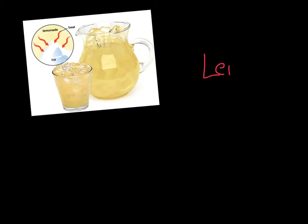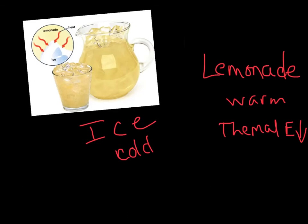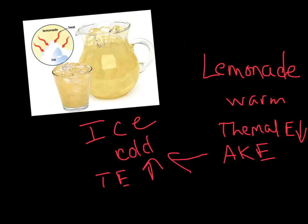To summarize: the lemonade starts out warm, the ice starts out cold. The thermal energy of the lemonade is going to decrease, while the thermal energy of the ice is going to increase. Because the lemonade has transferred some of its average kinetic energy to the ice, you get a decrease in the average kinetic energy of the lemonade, which means the temperature also decreases.